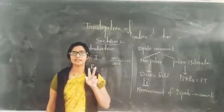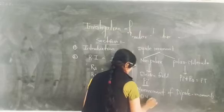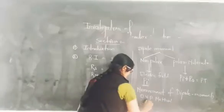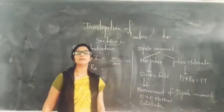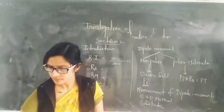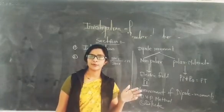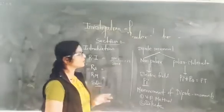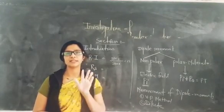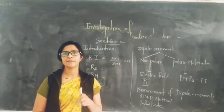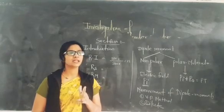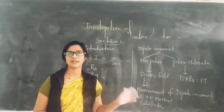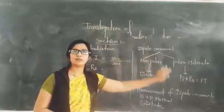After this, we studied the measurement of dipole moment — two methods were used: one is the vapor pressure method and the second is the dilute solution method. We also covered the dipole moment picture. Then, in the determination of molecular structure, we studied five points: first, percentage of ionic character; second, geometry of the molecule; third, bond moment; fourth, cis and trans nature of the molecule; and fifth, the polarity value of the molecule.